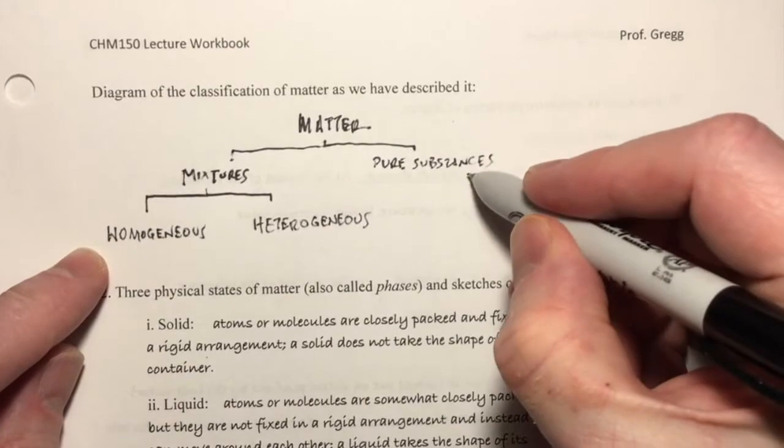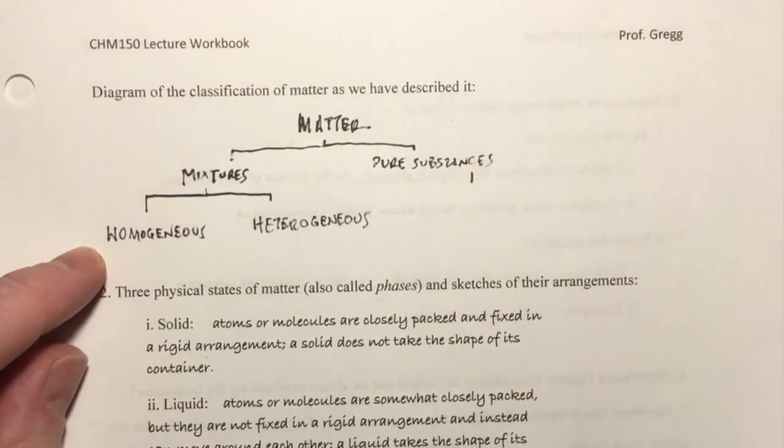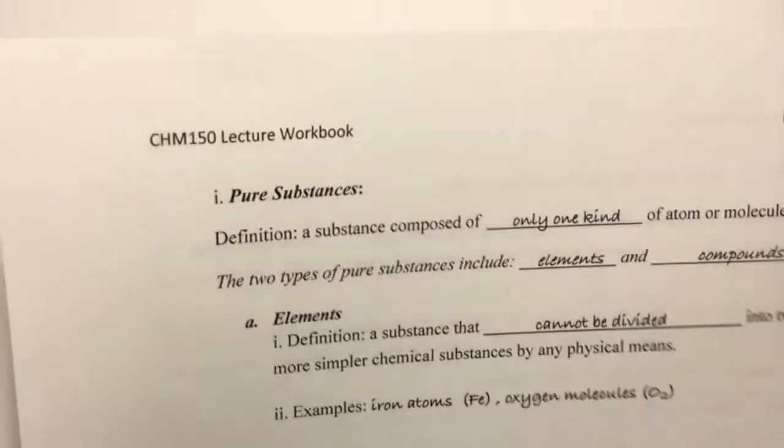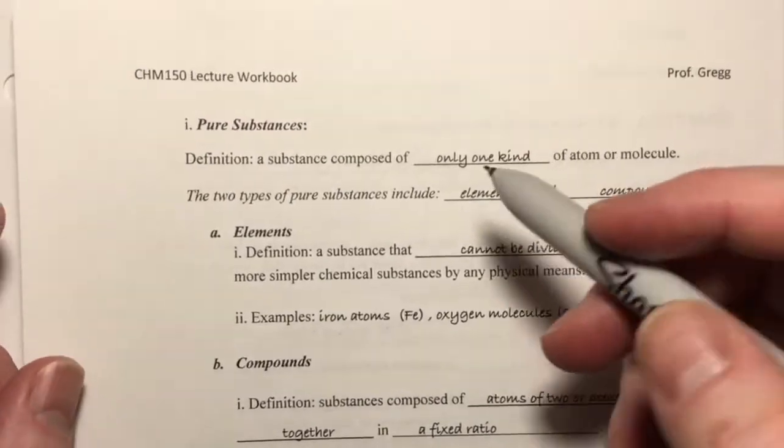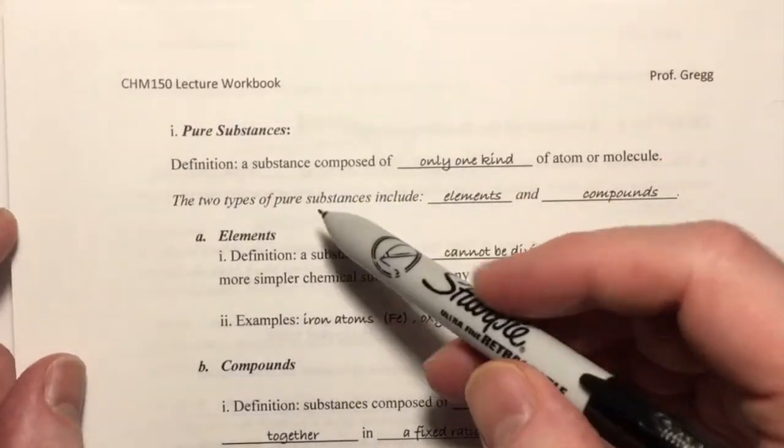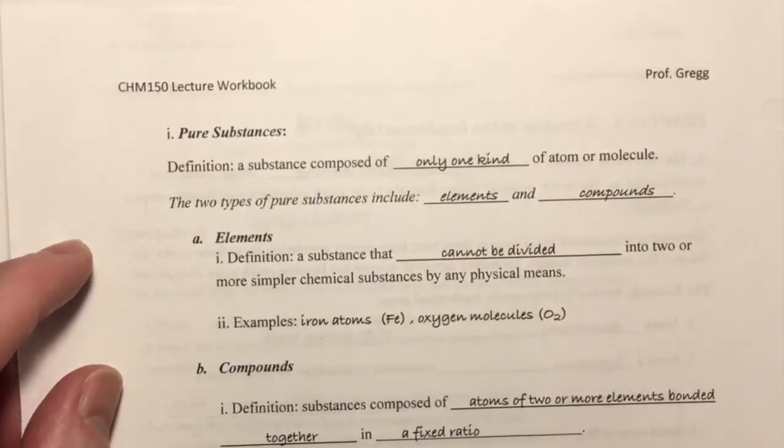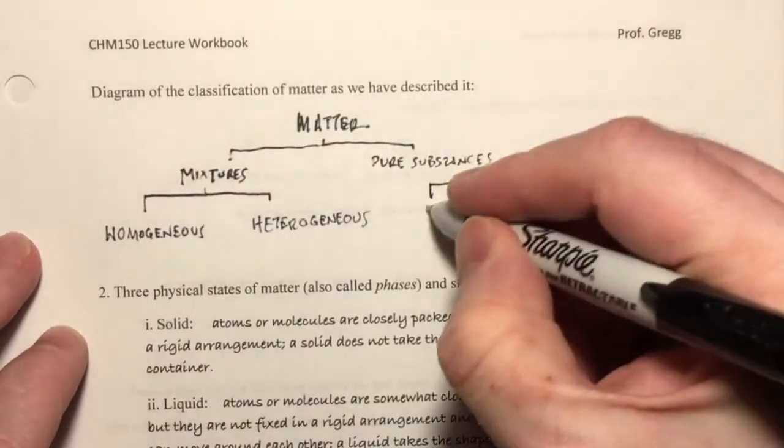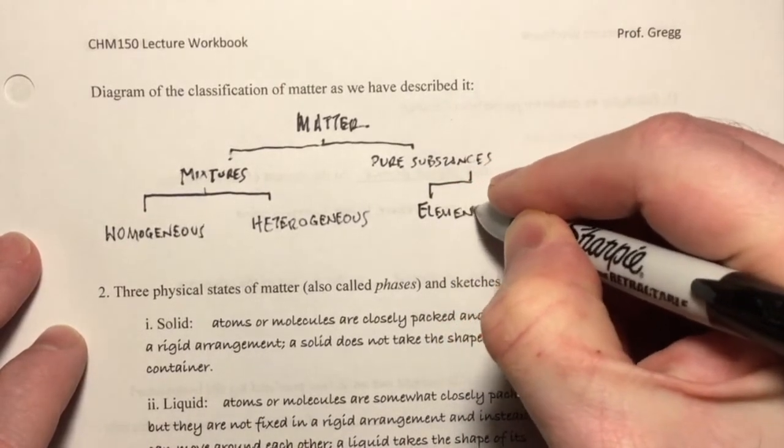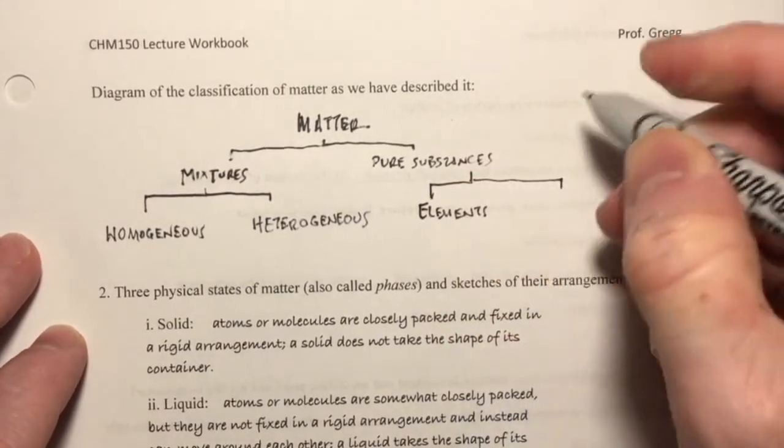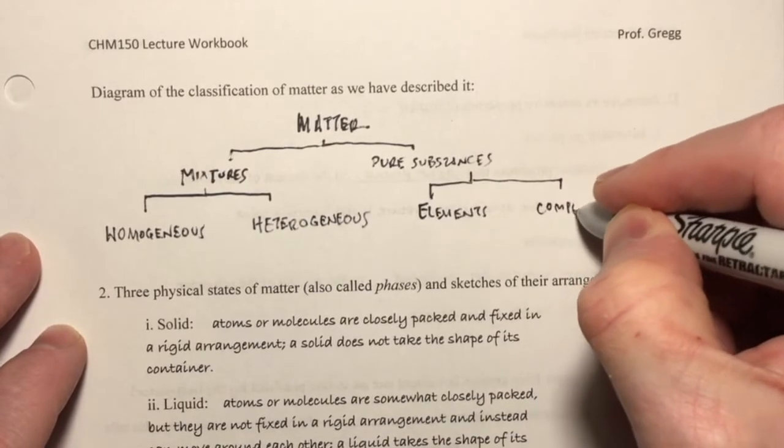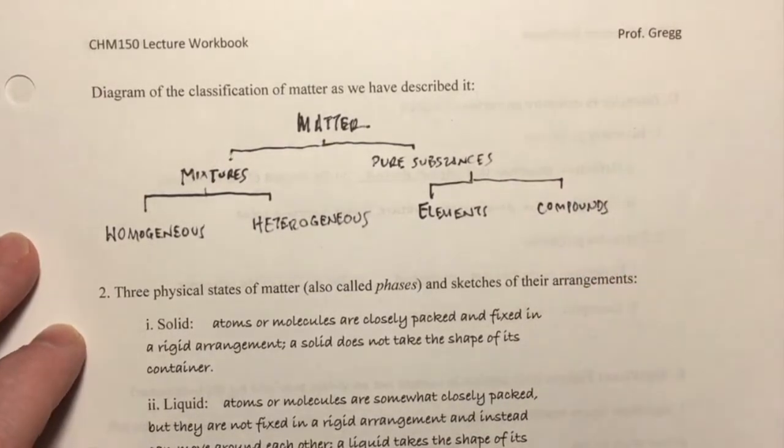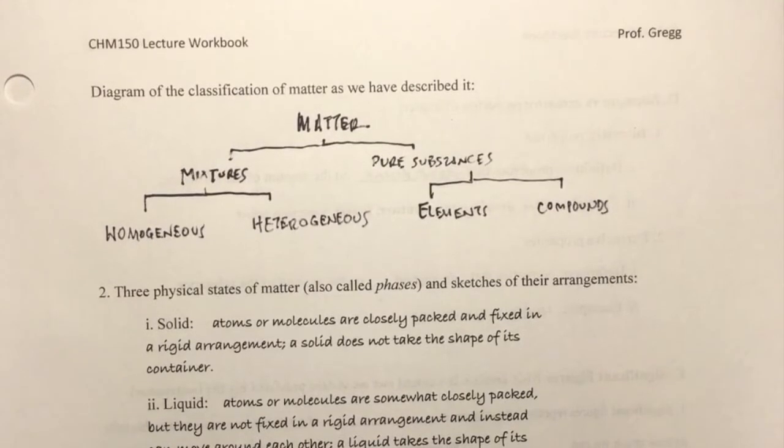All right, so then we have pure substances, and how are we going to subdivide pure substances? Well, pure substances, two types of pure substances, this is on page 6, elements and compounds. So elements, and then the other subdivision is compounds. And there you go, that's the way that we would generally classify or diagram the classification of matter as we are going to describe it.